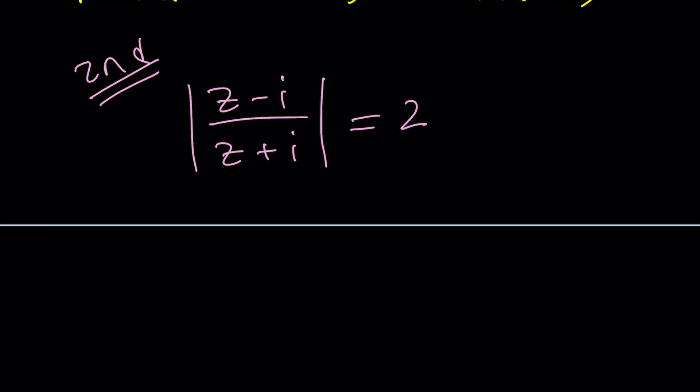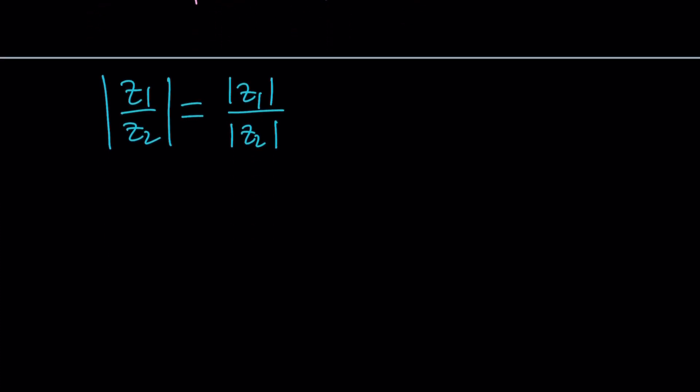Now, if you have the absolute value of Z sub 1 over Z sub 2, these are like two different complex numbers, or they could be the same, I guess, you could split the absolute value, just like with real numbers. Obviously, real numbers are a subset of complex numbers. So hopefully, lots of good properties that real numbers have will also be satisfied by complex numbers. But things are a little different there. So now, by using that property, we're able to separate the top and the bottom. And that's actually a huge improvement.